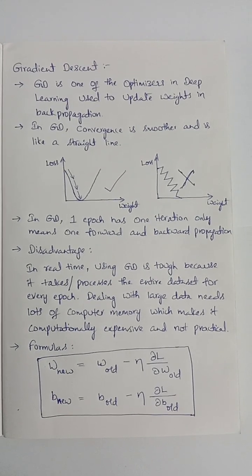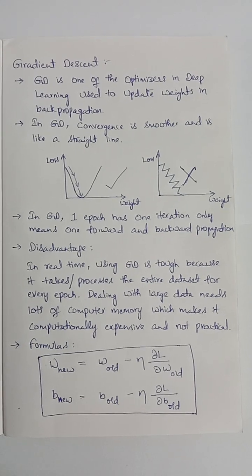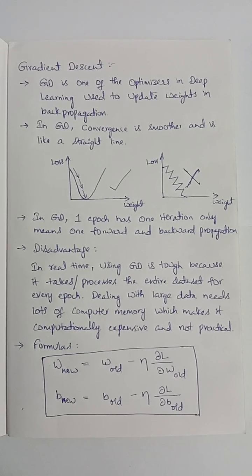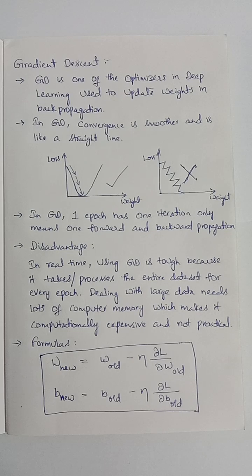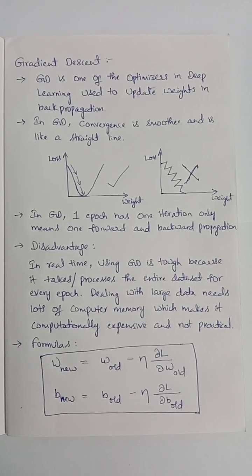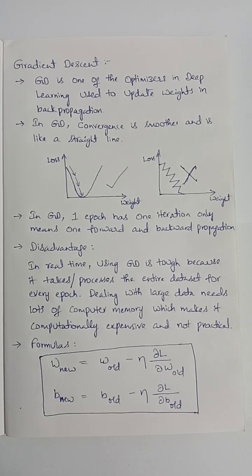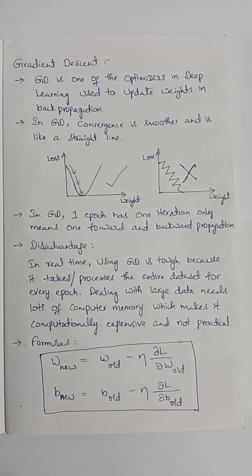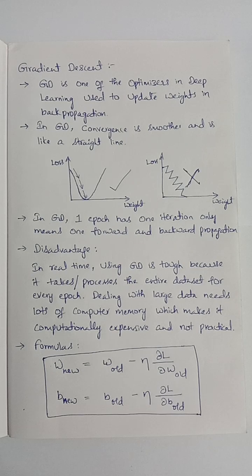Here, W stands for weight and B stands for bias. Weight updation formula is: W_new equals to W_old minus learning rate into derivative of loss with respect to derivative of W_old. And bias updation formula is: